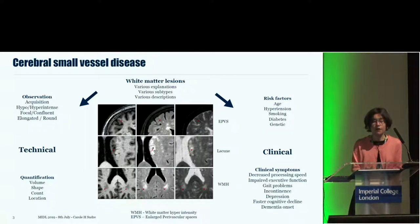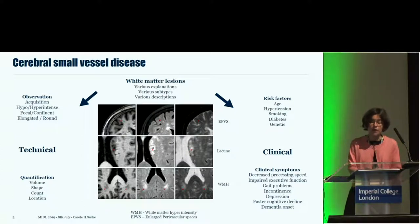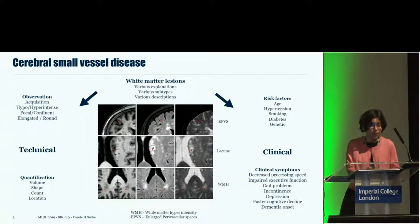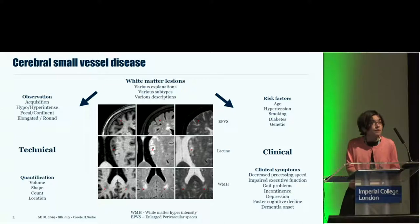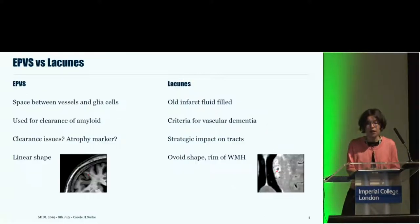These lesions are associated with different risk factors, particularly cardiovascular risk factors, age, hypertension, smoking, diabetes, and genetic factors. They have been linked to decreased processing speed, early onset of dementia, and faster cognitive decline. To understand their clinical relevance, we need to quantify them by volume, shape, count, and location. There is substantial work on white matter hyper-intensities, which are large, but it is much sparser for EPVS and lacunes, which are very small objects.